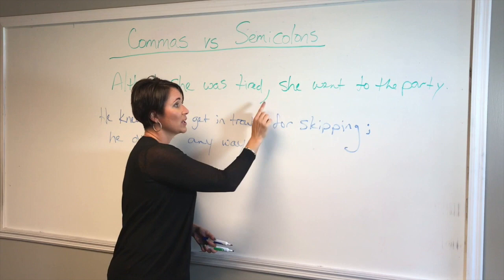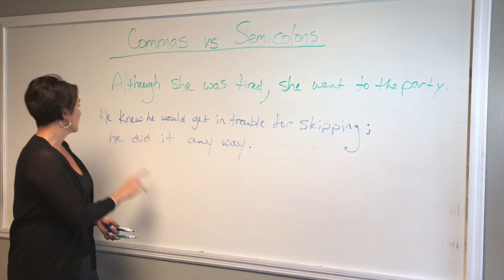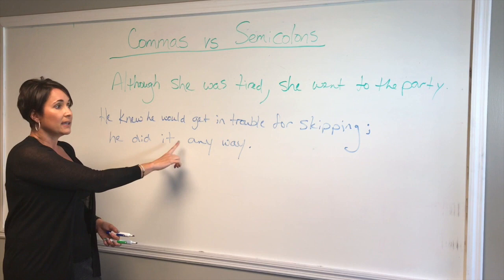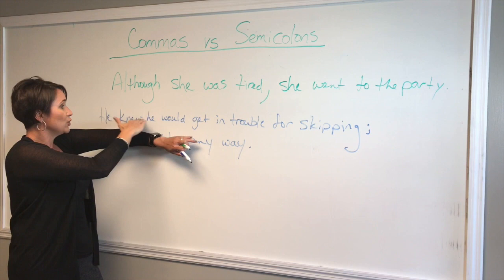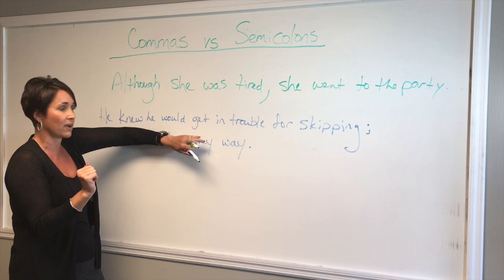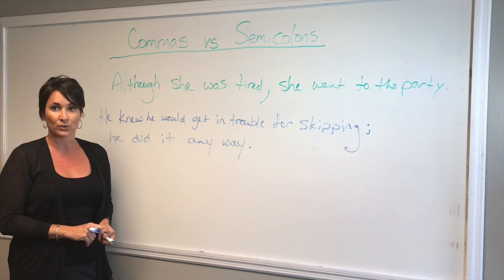Let's take a look at sentence two where we use the semicolon: 'He knew he would get in trouble for skipping; he did it anyway.' In this case, the semicolon is fine because if I cover up one side of the sentence, I have 'He knew he would get in trouble for skipping.' That is a sentence — I could put a period at the end of that and it would read perfectly fine. And then 'He did it anyway' is also a sentence. So in this situation, the semicolon works.